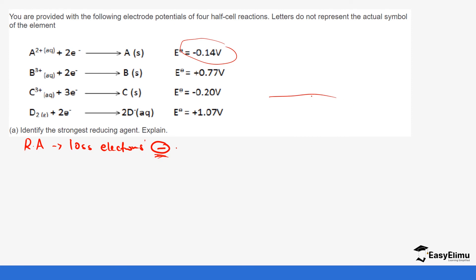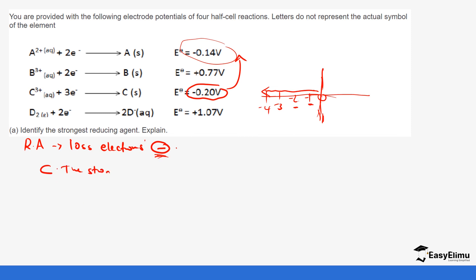It is important to notice that when we talk about the highest negative value, we are not using the number line in the sense that negative 1 is bigger than negative 2. We are saying which one is more negative — as you go across the number line it becomes more and more negative. So negative 0.20 is more negative than negative 0.14. The one that has the highest tendency of losing electrons is actually C, so C is the strongest reducing agent.